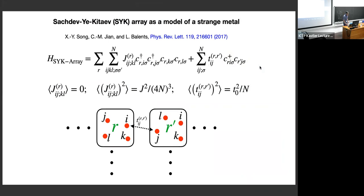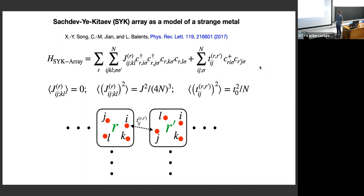The SYK-type model attracted interest from the solid-state community because, among many properties, it can reproduce the strange metal behavior of the resistivity if you make an array of SYK grains. The Hamiltonian of these grains was introduced in the work of Balents and co-authors. It consists of two pieces: the number of isolated grains and the SYK random interaction term, where R denotes the position of a grain in the array.